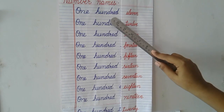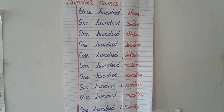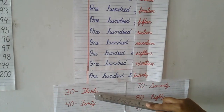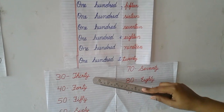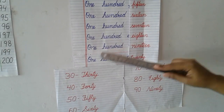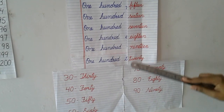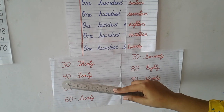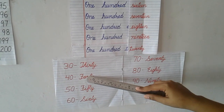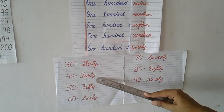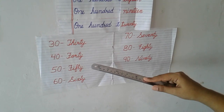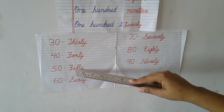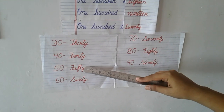You will just write ONE HUNDRED then THIRTY. Same way till 131, 132, 133 you are going to write till 140. What is the spelling of 40? FORTY. You will add 141, 142 and so on. Spelling of 50 — FIFTY.